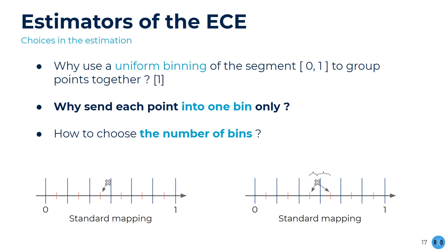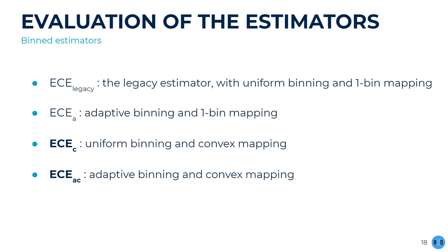We challenge the second point, which is the way points are sent into bins. We aim to solve a problem with the legacy estimator: samples whose scores are located at the limit between two bins only weight in one of the two, while at the same time they are the furthest away from the mean of their group, and thus are less representative. To solve this issue, we propose to send each sample into the two closest bins and weight them with the weights of the convex combination linking their score and the centroid of the two closest bins. This approach is called linear binning in the kernel density estimation community. Both improvements — adaptive binning and convex affectation — can be used together.